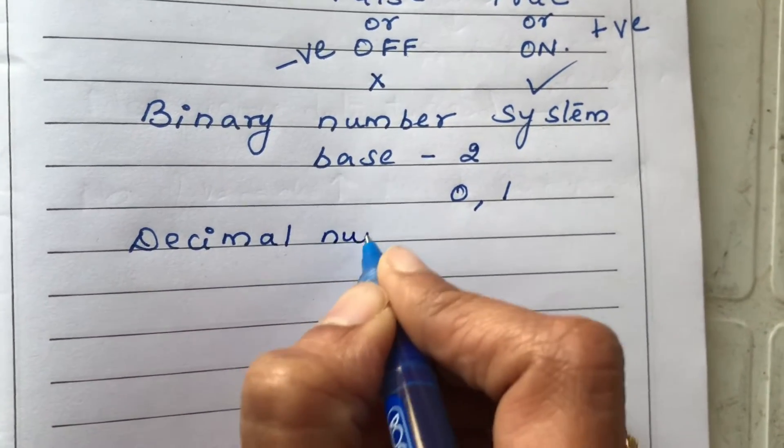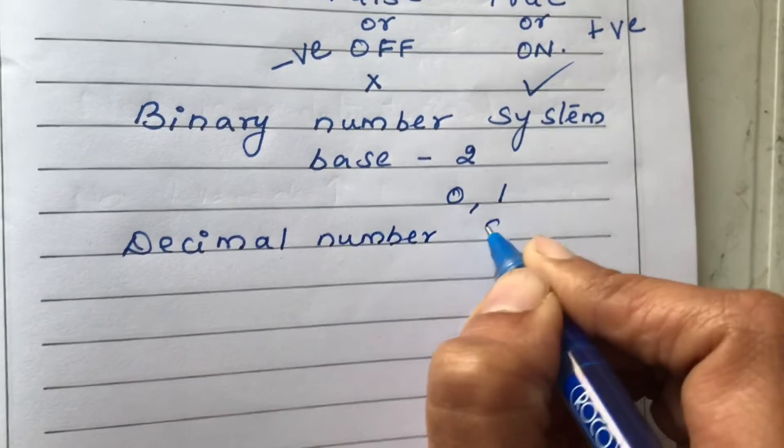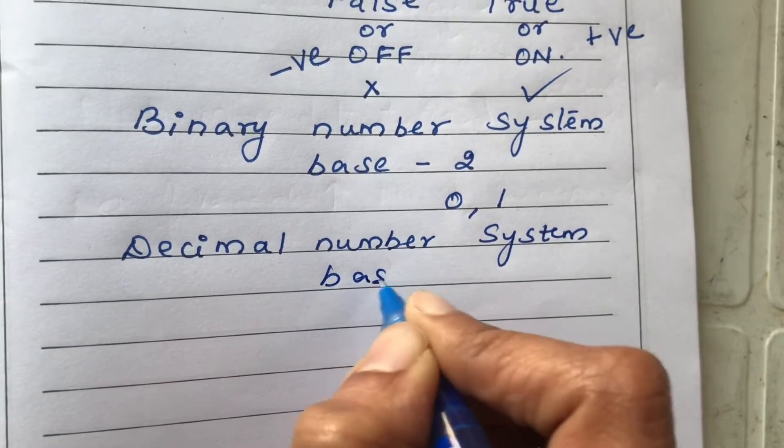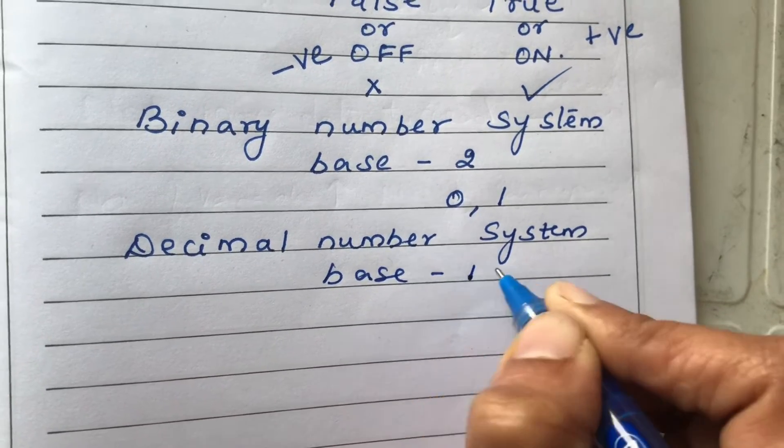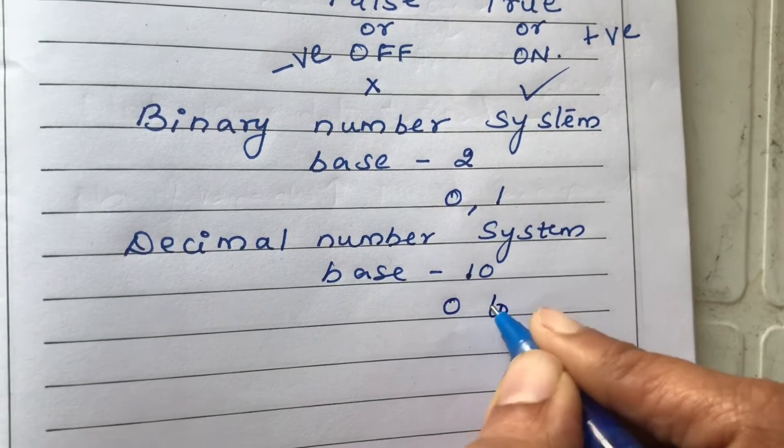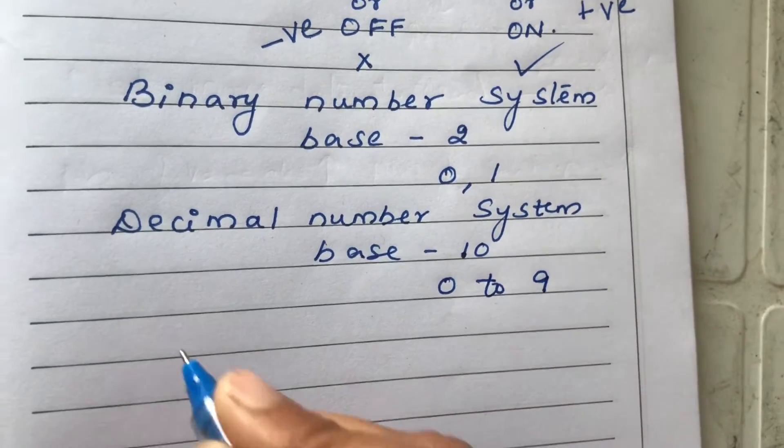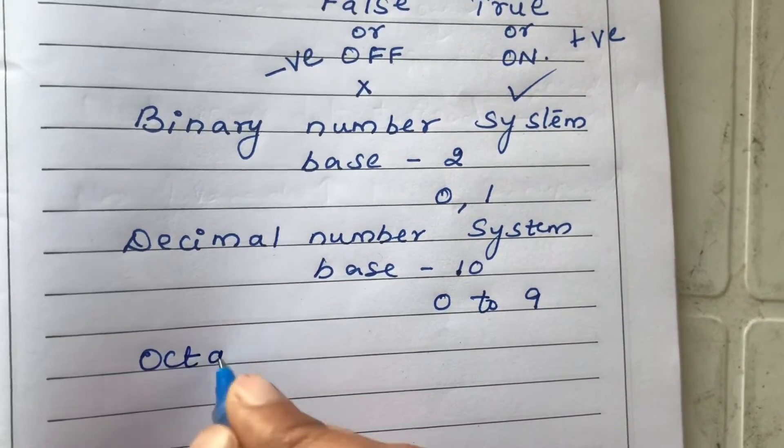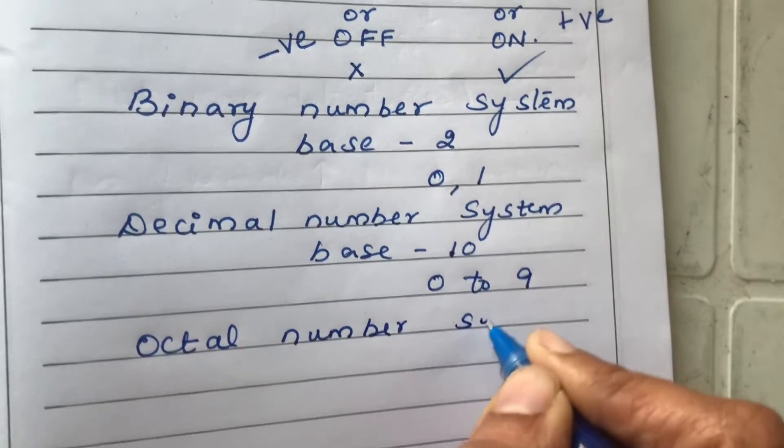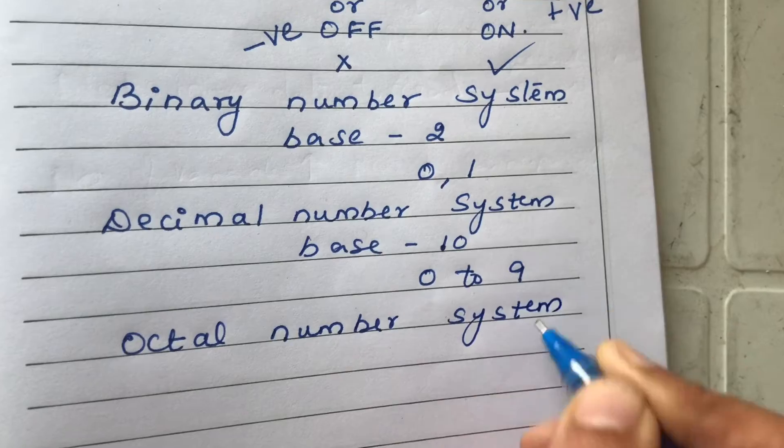Similarly, for a decimal number system, the base is 10, where the numbers are from 0 to 9. And for octal number system, the base is 8, the number starts from 0 to 7.